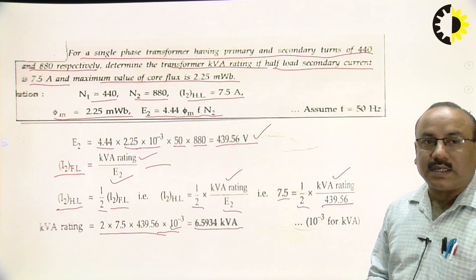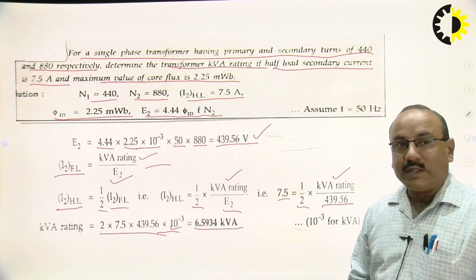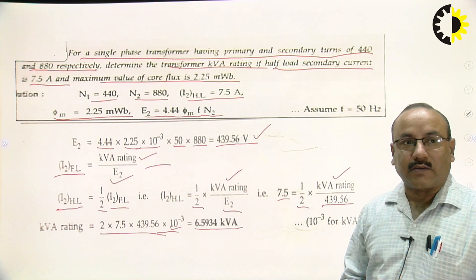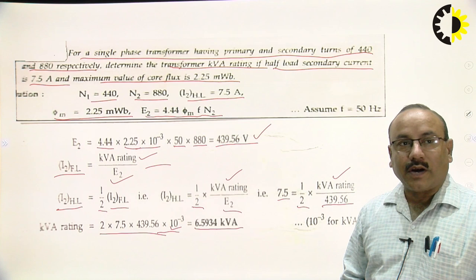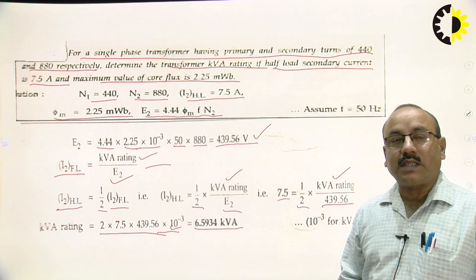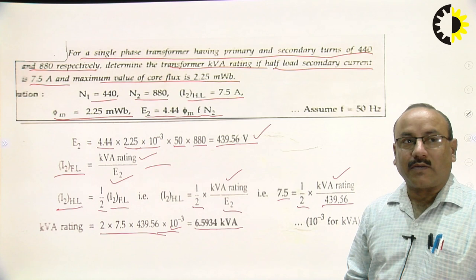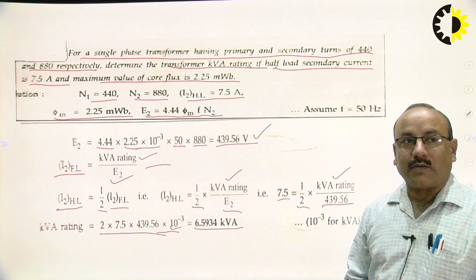That is all about this lecture today. In the next lecture we will discuss the phasor diagram of a practical transformer, which differs from the ideal transformer — all the assumptions made for the ideal transformer will be relaxed one by one, since those assumptions are invalid for a practical or non-ideal transformer.